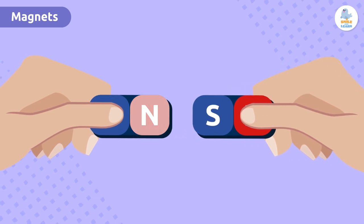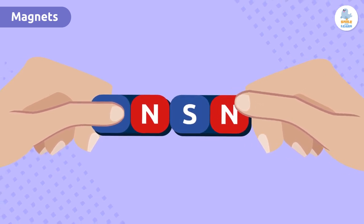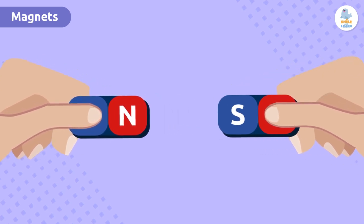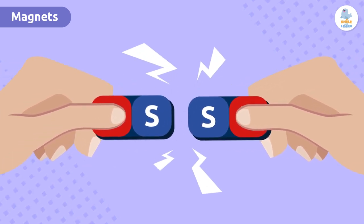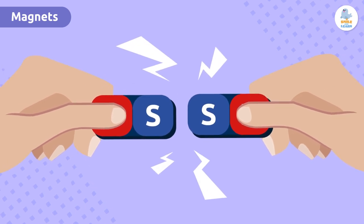If we put two opposing poles together, they attract each other. This means that if we bring the north pole of one magnet and the south pole of another together, they attract each other. On the other hand, if we put two of the same poles together, they repel each other. Pretty interesting, right?